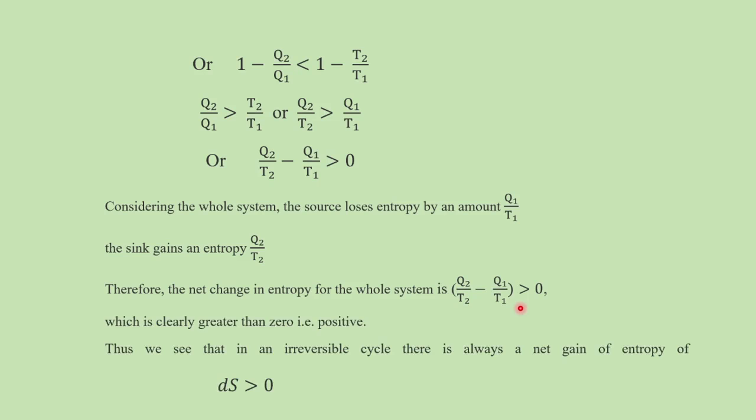So we must remember: if it is an irreversible cycle, entropy always increases; if it is a reversible cycle, the change in entropy is zero. On this basis, we can state the principle of increase of entropy.